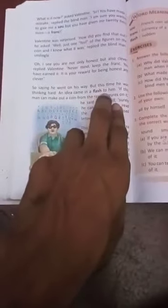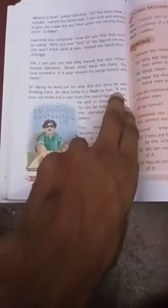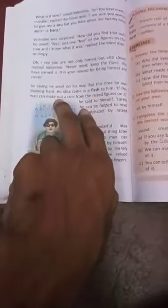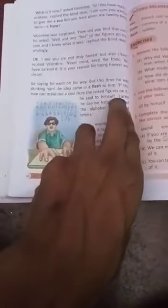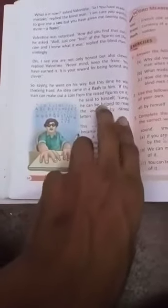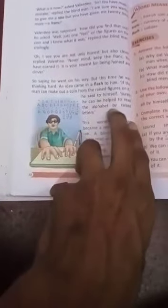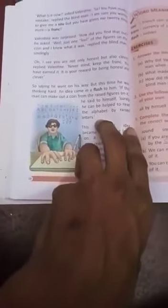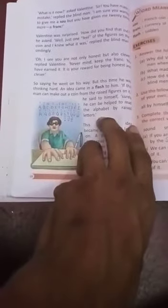Saying he went on his way, but this time he was thinking hard. An idea came in a flash to him. If this man can make out a coin from the raised figure on it, he said to himself, surely he can help to read the alphabet by raised letters.